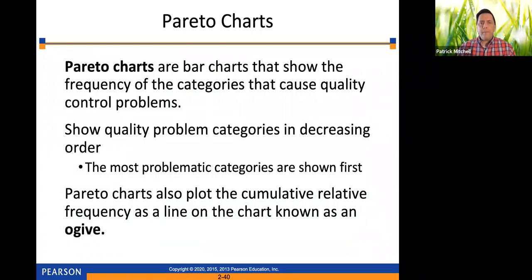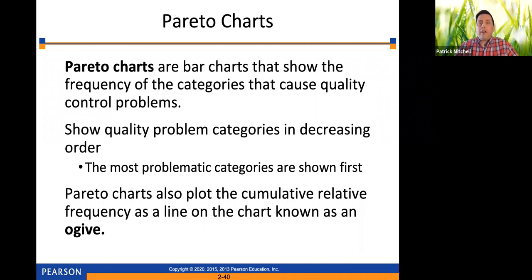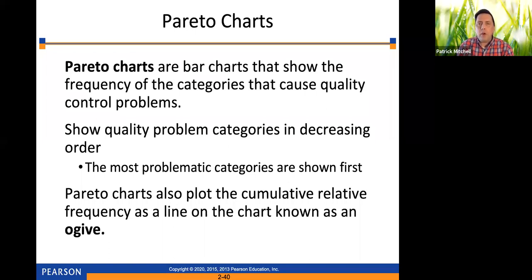Next we have Pareto charts. Pareto charts are bar charts that show the frequency of the categories. I think of a Pareto chart as a bar chart that has the categories in descending order of frequency. One example of how you could use that is categories that cause quality control problems — you show those categories in decreasing order with the most problematic categories first. Pareto charts also plot the cumulative relative frequency as a line on the chart, which is called an ogive. We talked about those in the last section.